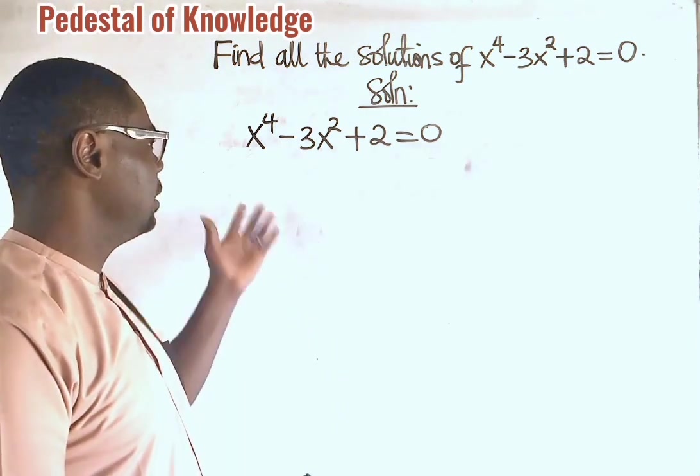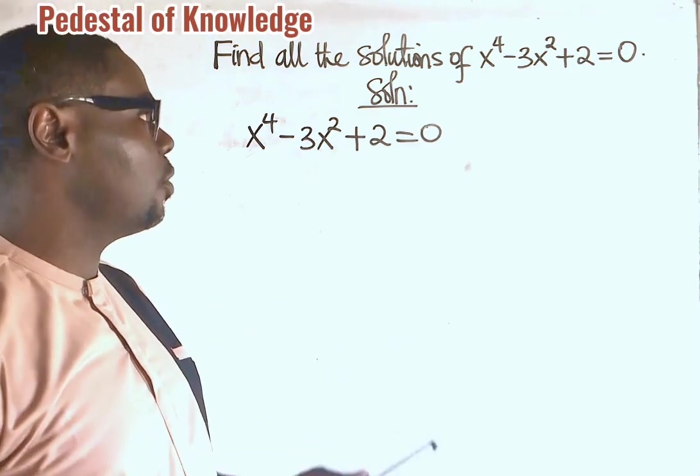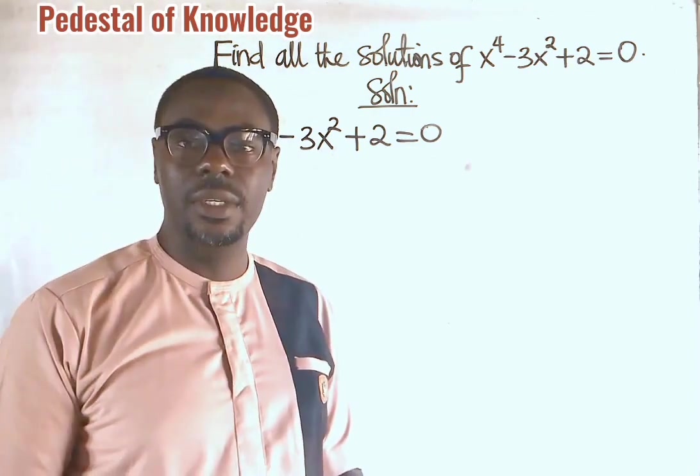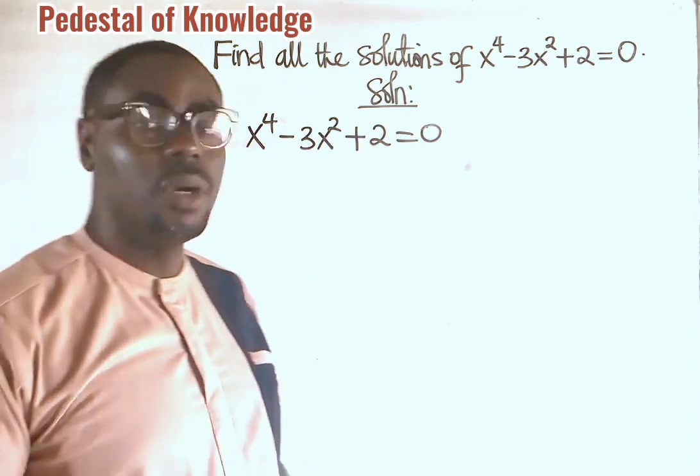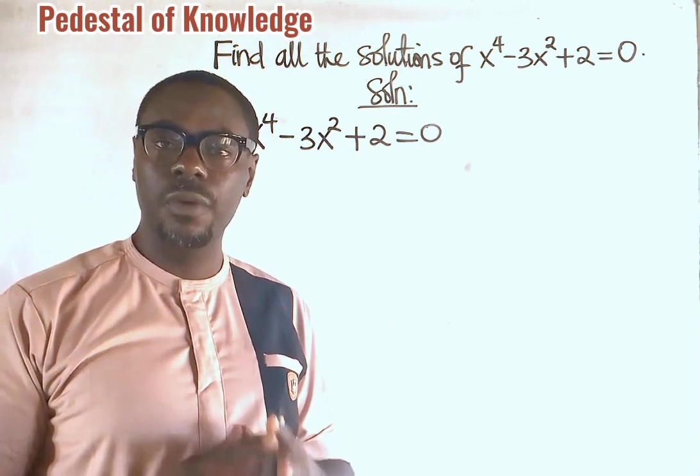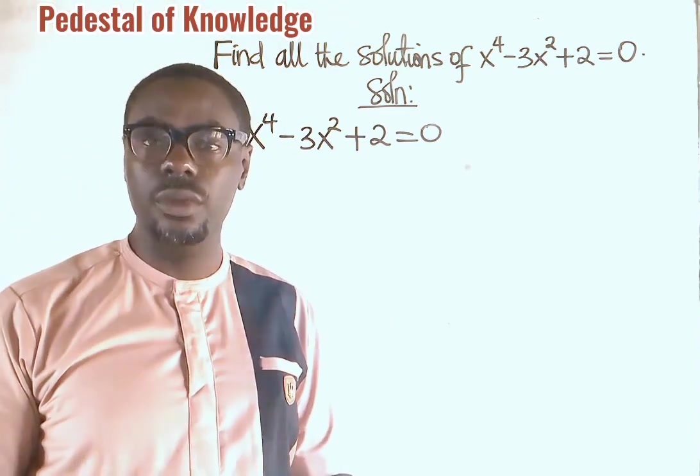It is very clear that this is a polynomial of degree 4. Because the highest degree of the unknown variable is equal to 4, then we are going to have 4 solutions. And those 4 solutions are known as the zeros or the roots of the polynomial.